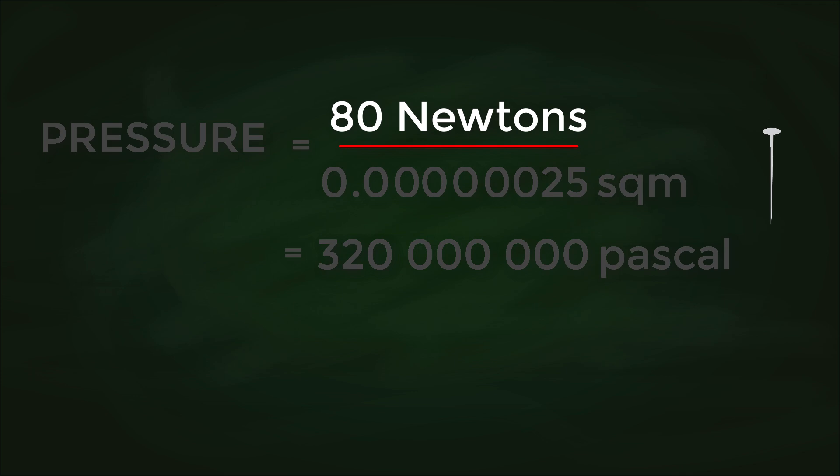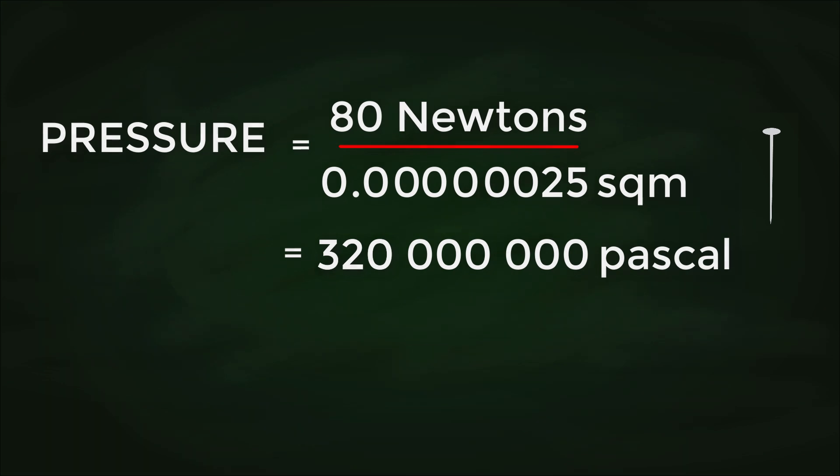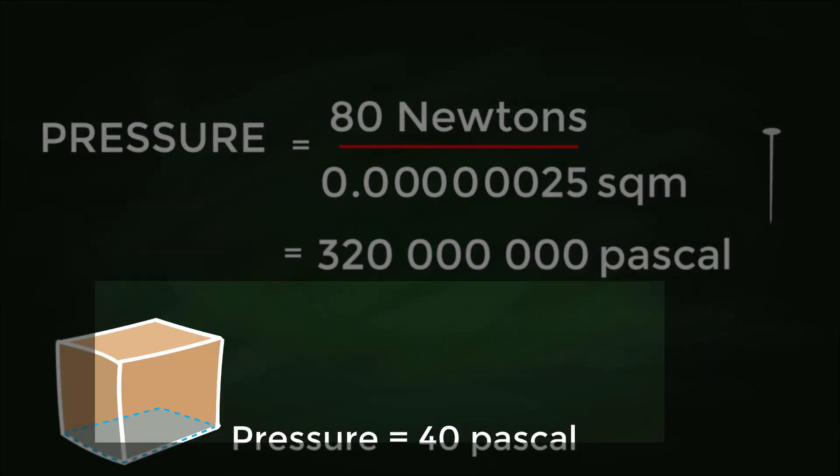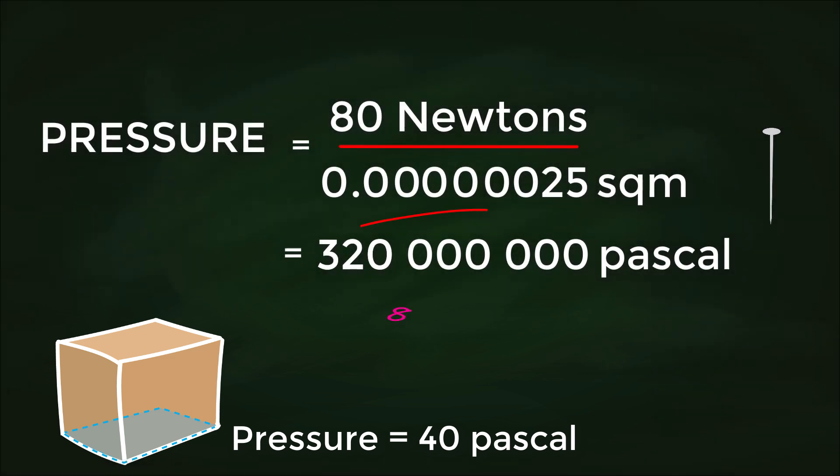That means the same force—80 newtons—is able to exert a pressure that's 8 million times greater if it's being exerted by a pin compared to an object with the area of that box. Eight million times greater. Amazing, right?